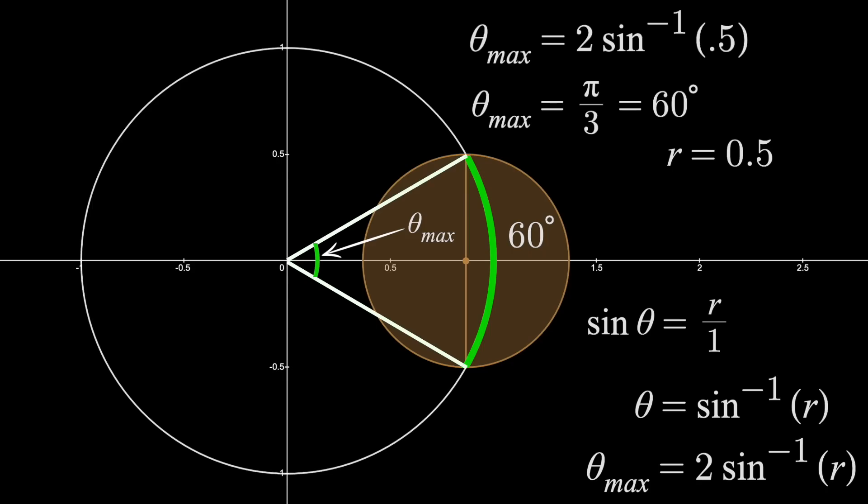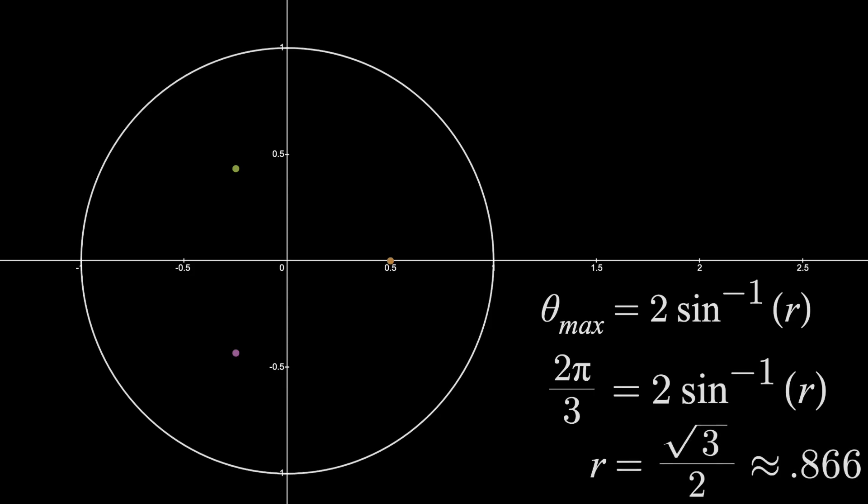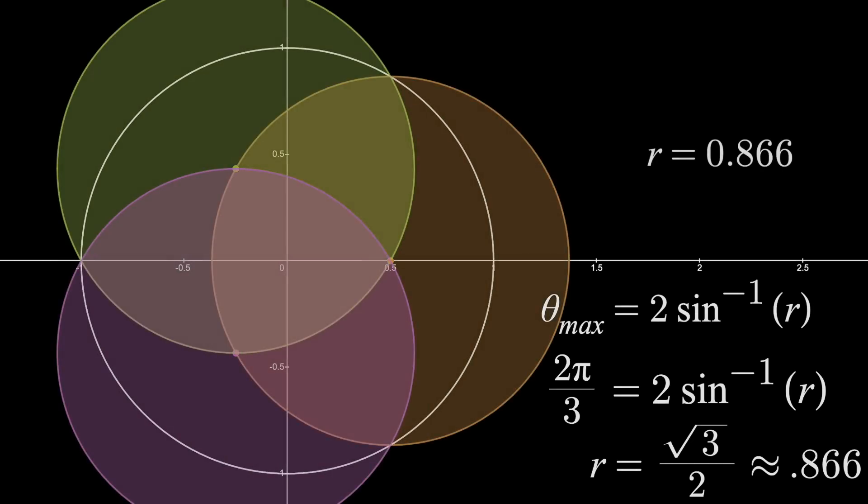So we'd need 6 of these to cover the entire circumference, but we only get 3 disks, meaning they each need to cover an arc of 120 degrees, or 2 pi over 3 radians, 1 third of the circle. Solving for r, we find the radius is root 3 over 2, or roughly 0.866 kilometers. And this tells us that 3 disks with that radius can cover our entire mall, like we see here.